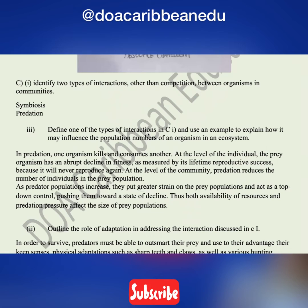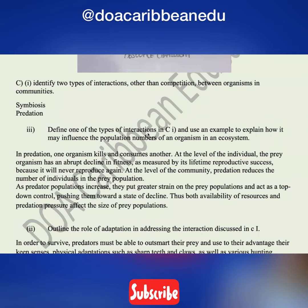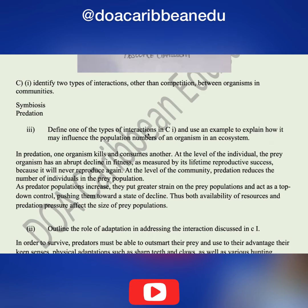Part C says: identify two types of interactions other than competition between organisms in communities. They gave away the answer here. Two other interactions — you could say symbiosis and predation. Don't list commensalism and mutualism individually because those are grouped under symbiosis.